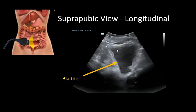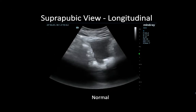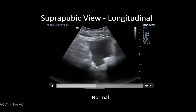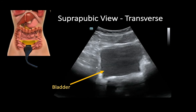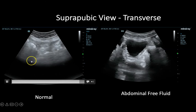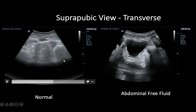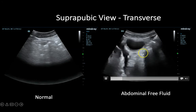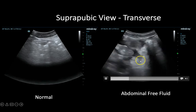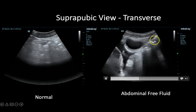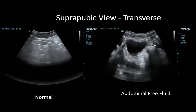Now let's talk about the suprapubic view, where we assess the bladder and look for pelvic free fluid. We obtain both longitudinal and transverse views of the bladder. A normal scan shows no anechoic fluid collection around the bladder in either view. In a pathologic clip of the transverse view, we can see anechoic fluid on both sides of the bladder with loops of bowel floating in that fluid, which is indicative of peritoneal free fluid.